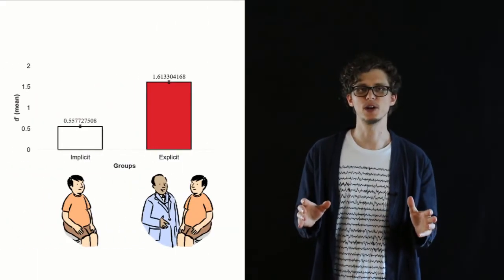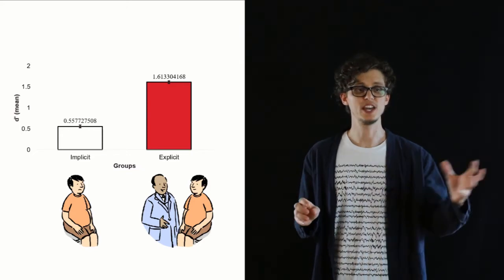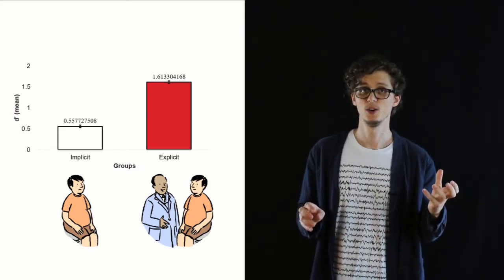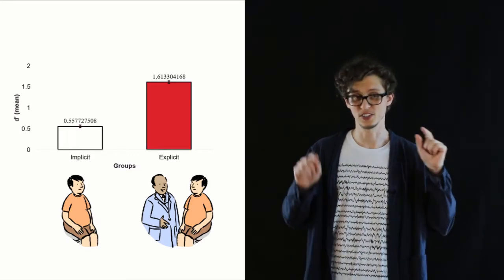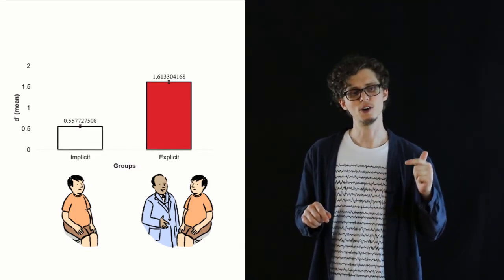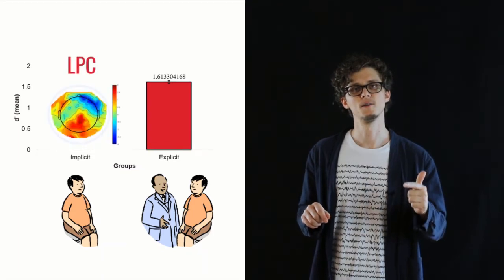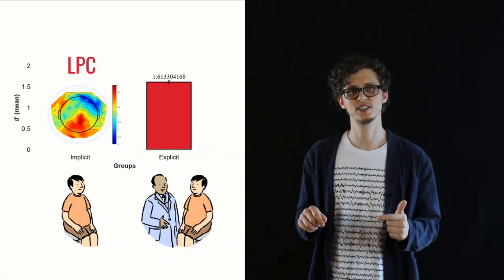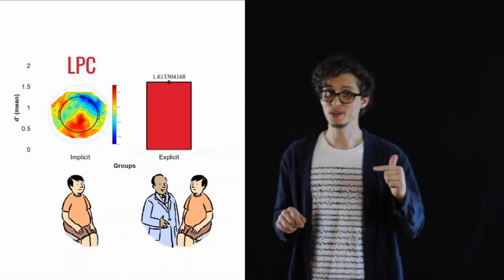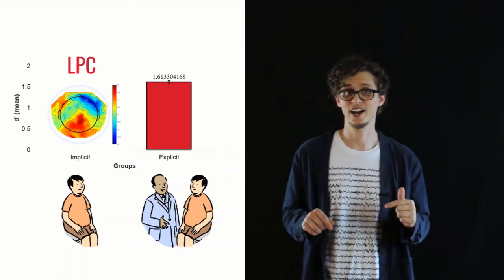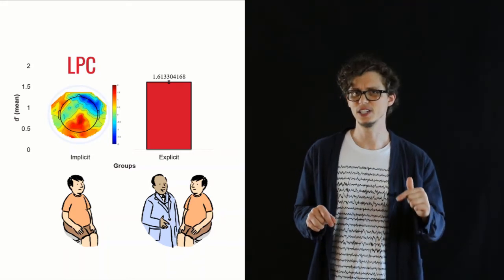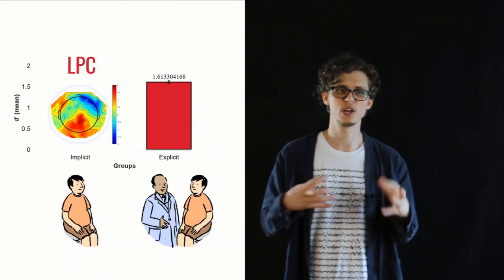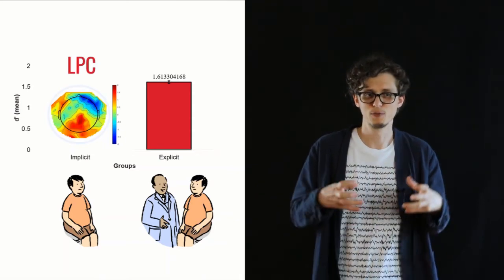Something we've seen in similar studies is that when people internalize rules, even if they've learned them for the first time, they get this brain response that is the same kind of brain response that people get to violations in their native language. So if we see this LPC, it tells us that they've really internalized the rule — they're processing it the same way they would process their own native language. That's a really great indicator that they have learned the rule in a very deep kind of way. For the implicit learning group — the group that didn't have that high accuracy — we see the expected P300, and we also get the LPC, that brain response associated with native language processing.